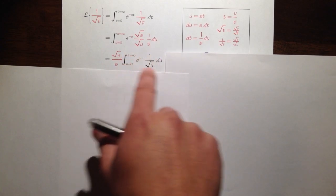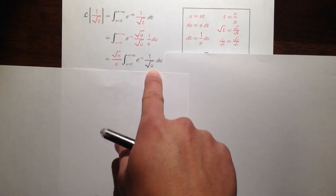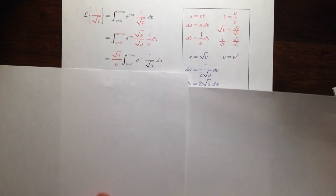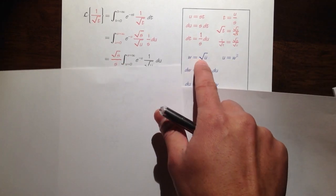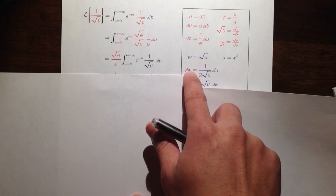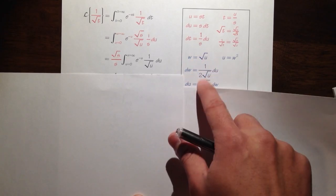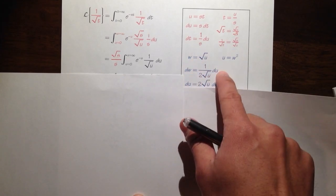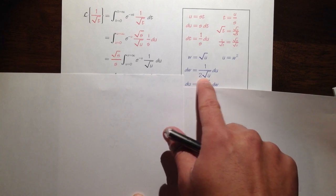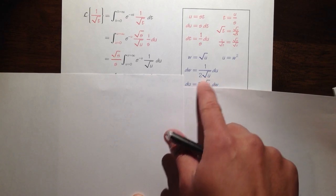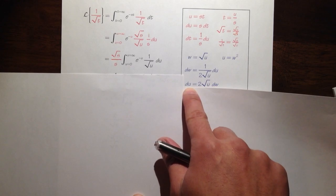Inside we have the integral from 0 to infinity of e to the negative u times 1 over square root of u du. To take this integral, we have to do another substitution — a w-substitution. I will let w equal square root of u, and differentiate both sides: dw is equal to 1 over 2 square root of u du.